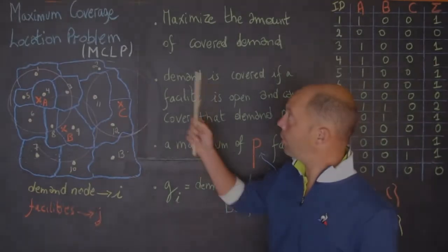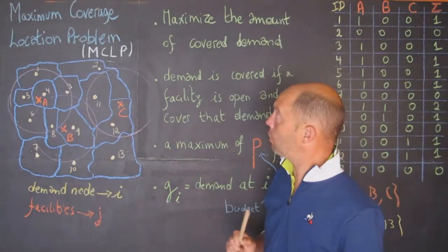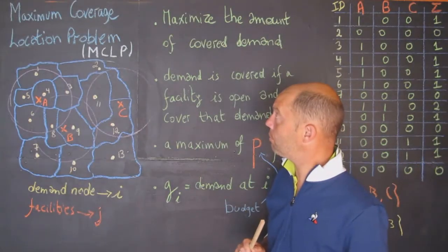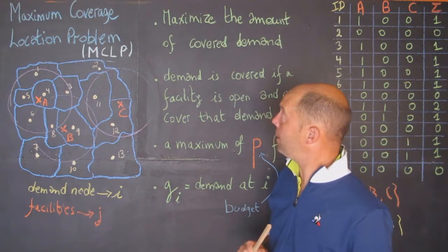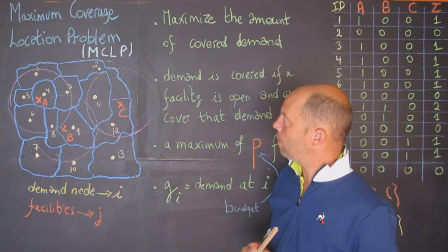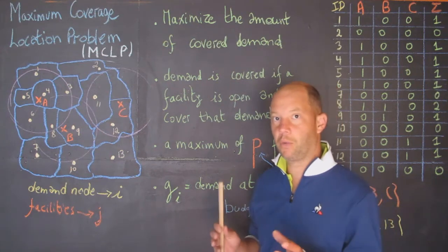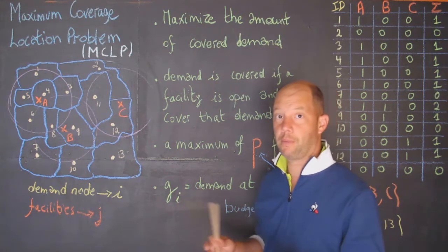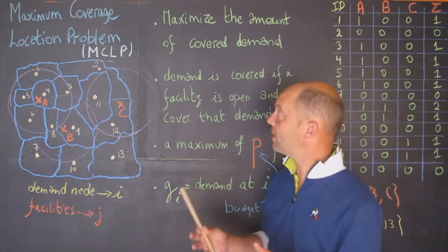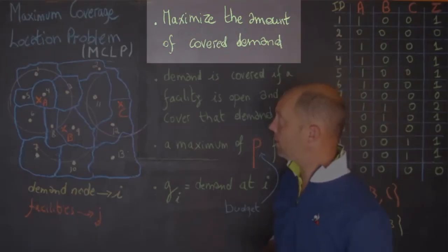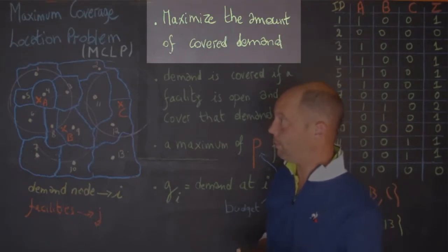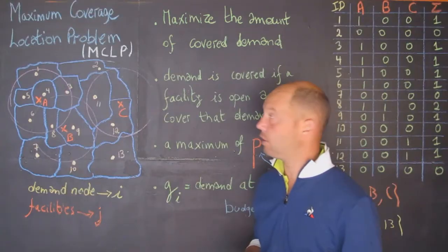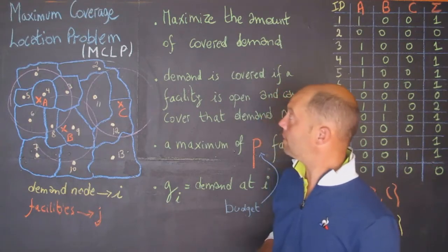I would like to talk about another model: the Maximum Covering Location Problem, MCLP, which is different from the one we saw before, which was a set covering problem. Here we're trying to maximize the demand that is covered, whereas the other one was to minimize the number of facilities.